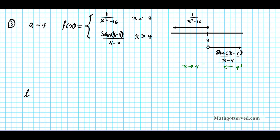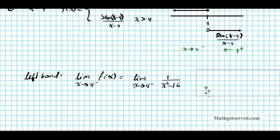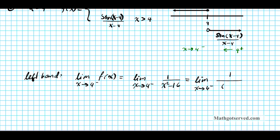Let's compute the left-hand limit. The left-hand limit is the limit as x approaches four from the left of the function. The function in play is one over x squared minus sixteen. To do this accurately we need to factor the denominator. So this becomes the limit as x approaches four from the left of one over x minus four times x plus four.